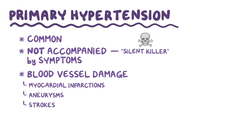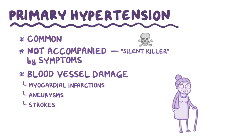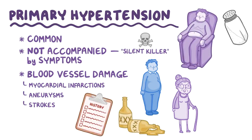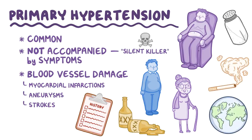Risk factors for primary hypertension include old age, obesity, family history, a salt-heavy diet, a sedentary lifestyle, heavy alcohol consumption, smoking, and race. For example, people of African descent are more likely to develop hypertension. Some of these risk factors can be improved with lifestyle changes that help to reduce hypertension.